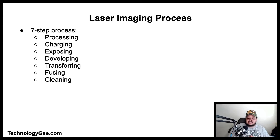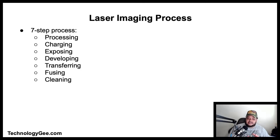The laser imaging process is a seven-step process you need to know to pass this exam. Step one is processing: the document to be printed is encoded in a page description language such as PostScript, Printer Command Language, or Open XML Paper Specification. The raster image process converts the page description into a bitmap stored in the printer's memory. Each horizontal strip of dots across the page is known as a raster line or scan line.